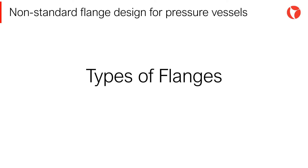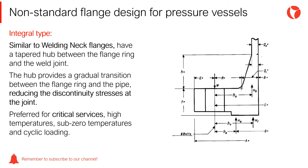There are different types of flanges that can be used according to Appendix 2 of ASME Section 8 Division 1. The type of flange is selected mainly as a function of the design pressure and temperature, and also considering the mechanical loads acting on the flange. Integral type flanges, similar to welding neck flanges, have a tapered hub between the flange ring and the weld joint. The hub provides a gradual transition between the thicker flange ring and the relatively thinner pipe or vessel wall thickness, thus reducing the discontinuity at the joint. These flanges are preferred for critical services, high temperatures, sub-zero temperatures and cyclic loading.